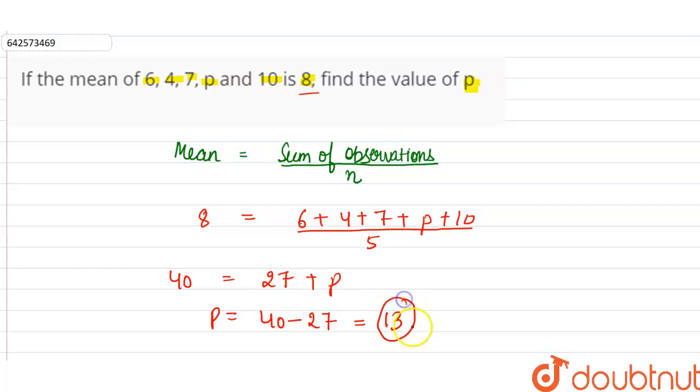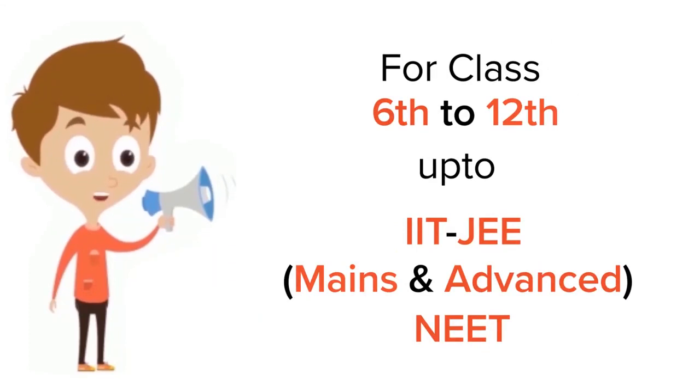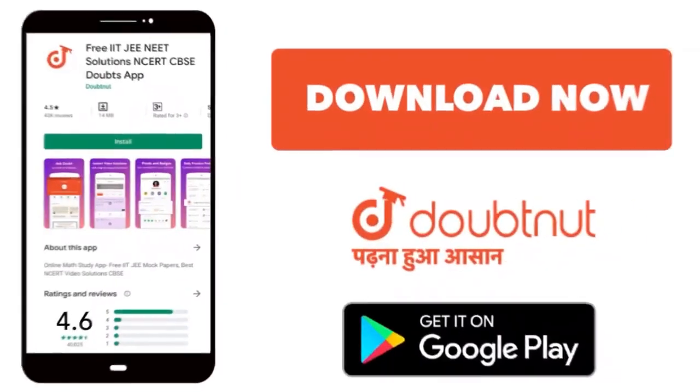Right, for class 6 to 12, IIT-JEE and NEET level, trusted by more than 5 crore students. Download Doubtnet app today.